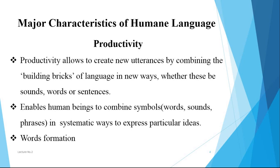In contrast, animals cannot produce new utterances and they have no system of language. However, they do have different types of communication to convey their ideas or feelings in a systematic way, but it is a fixed one.